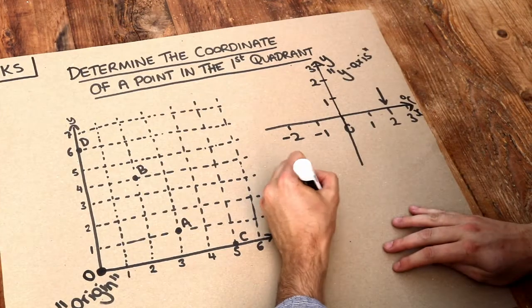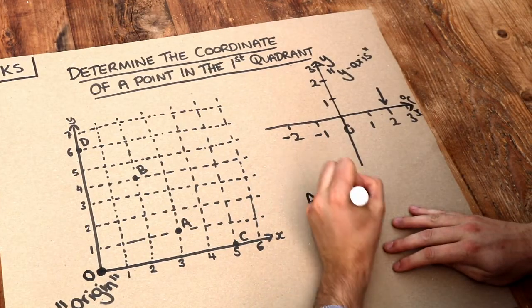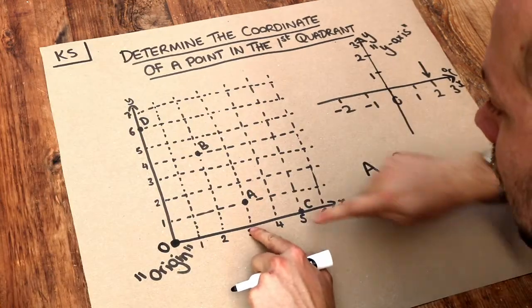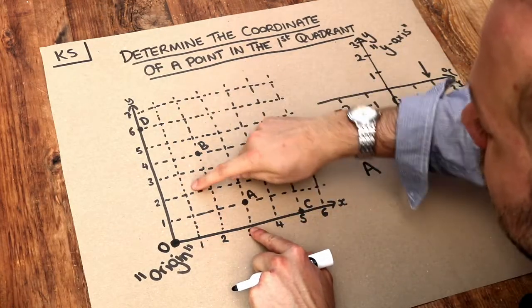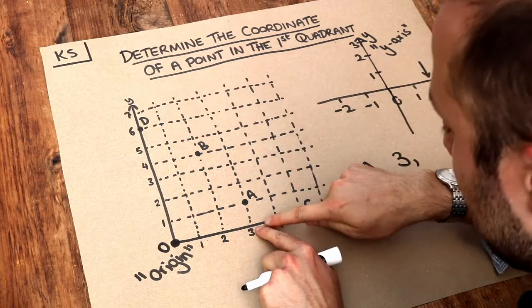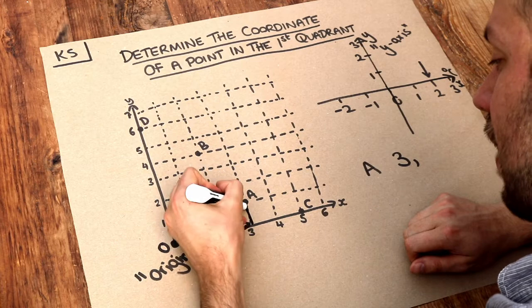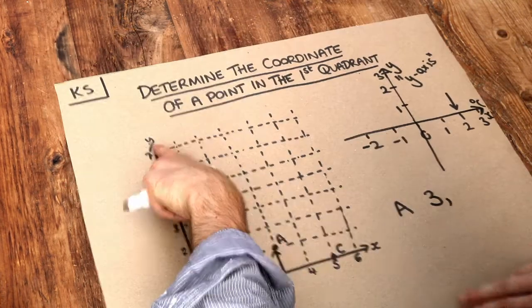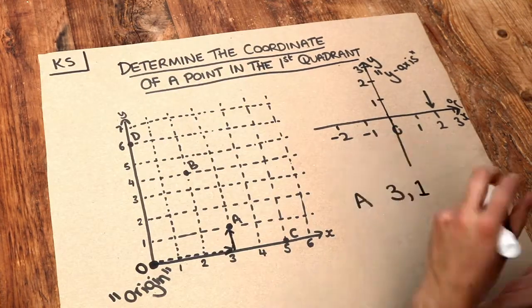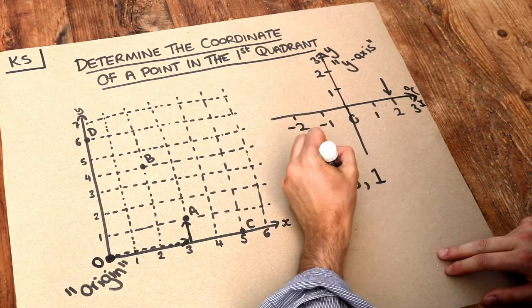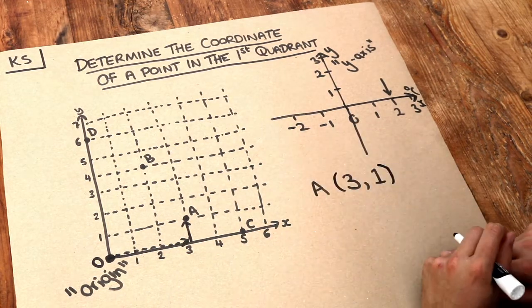So let's record that. We've got three. And then what about the up-down number line? This is the y-axis. Can you see we have to go one up? So we've gone three units right and then one unit up on the y-axis, so we put one there. And this is known as a coordinate and we always put it in brackets like this.